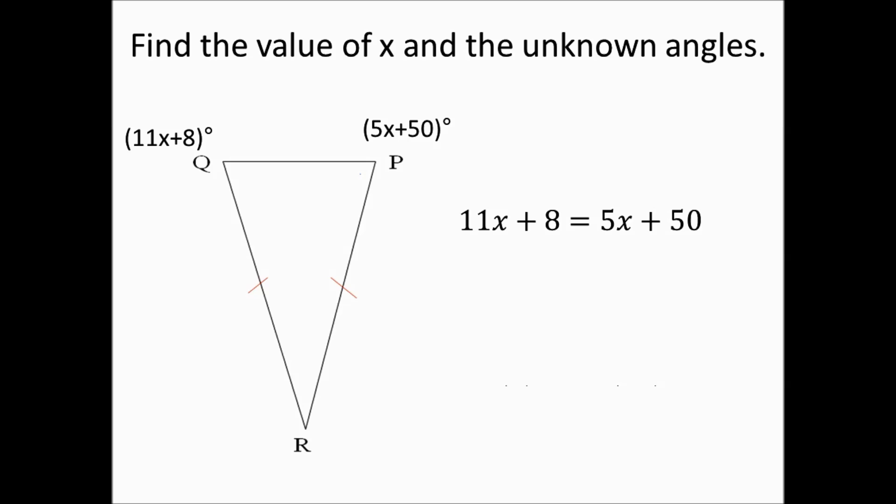The rest becomes algebra. The first step is to subtract 8 from both sides: 8 minus 8 gives us 0, and 50 minus 8 gives us 42. So 11X equals 5X plus 42.